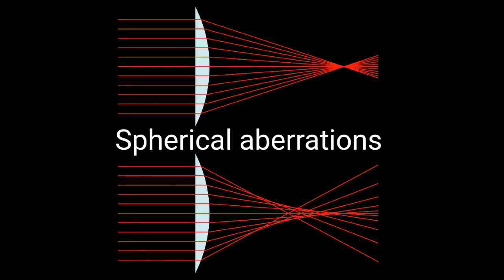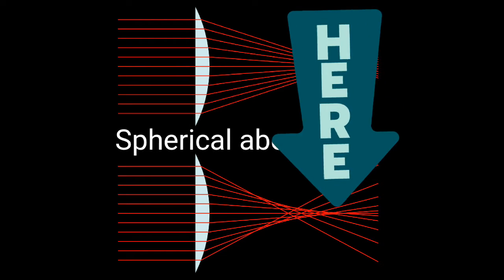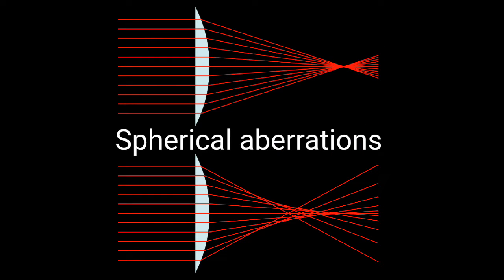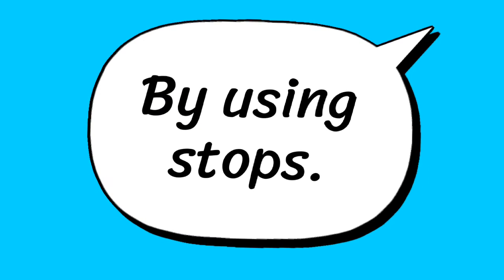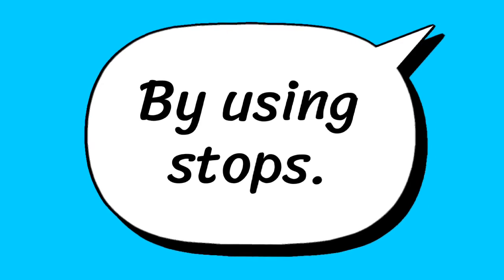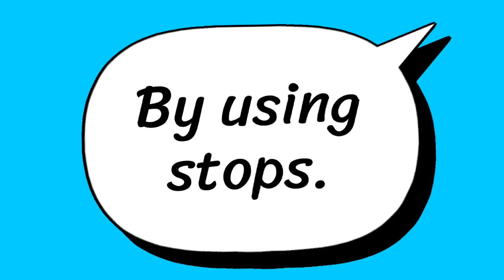In spherical aberration, light rays passing through the center of the lens focus at the right location, as you can see in the figure. However, light rays passing through the periphery of the lens come to focus at different locations. Spherical aberration can be minimized by using stops, which reduce the effective lens aperture.